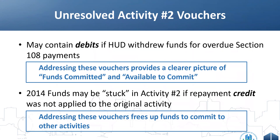Let's get into the nitty gritty of activity two vouchers. As mentioned, activity two might contain debits if HUD withdrew funds for overdue Section 108 payments. It's important to take care of these vouchers and put them in the proper place, because doing so gives you a clearer picture of the funds committed and available to commit. If you don't, your available-to-commit funds can sometimes show more than what you really have available.